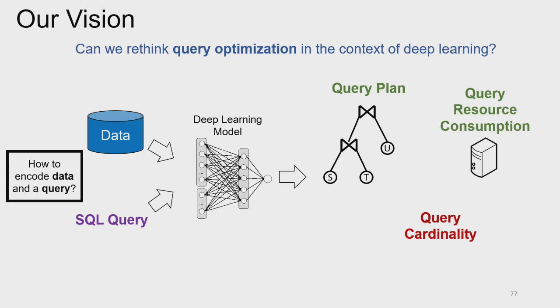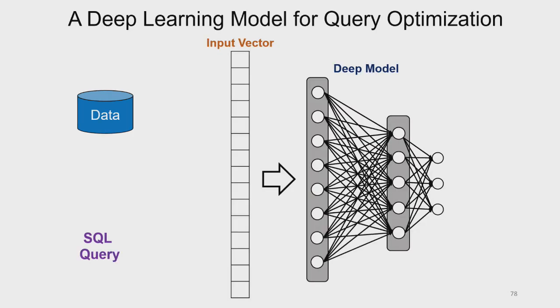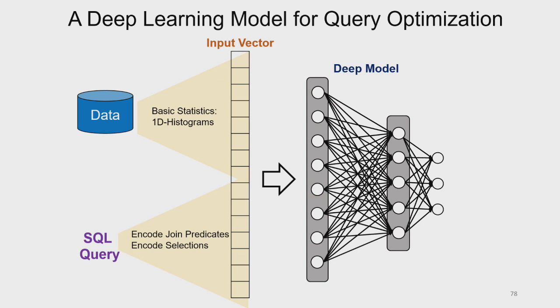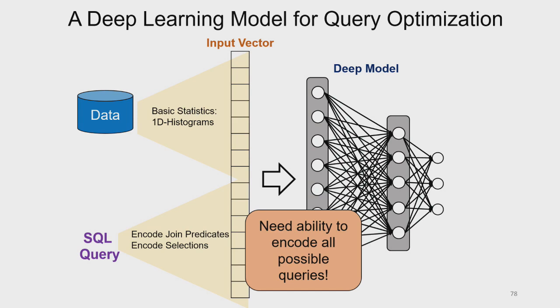One thing to consider is how to encode our inputs — the data and the query — as input vectors to the model. One approach is to provide simple one-dimensional histograms across columns as data statistics, and encode possible join predicates or selections for the query. The problem is these vectors need to be very long to encode all possible queries. Our intuition is to instead view the query plan as a sequence of operations: filter the customers relation, filter the regions, combine with a join, and iterate through all operations until the query plan is complete.